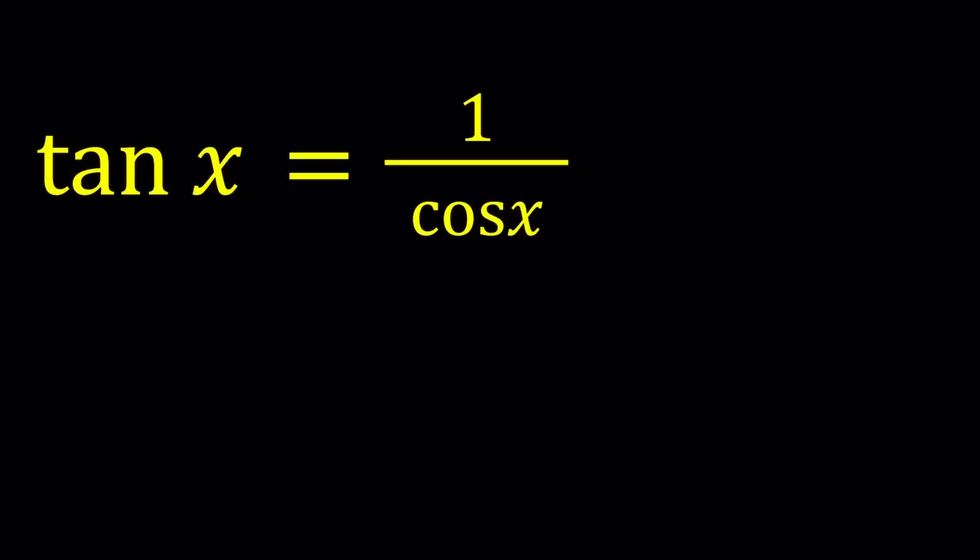Alright, so we have this type of equation where it's not necessarily a standard type of equation, so we can turn everything into sine and cosine. That's usually a good method for most equations, unless there are other identities that you can use. It's almost always helpful.